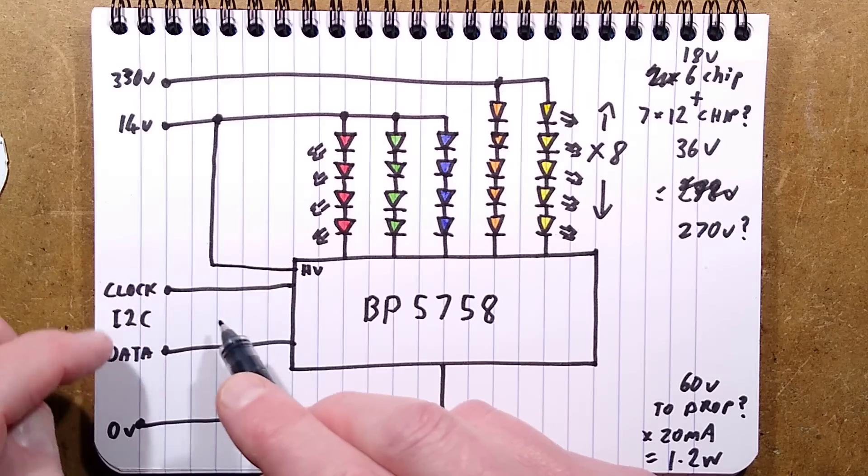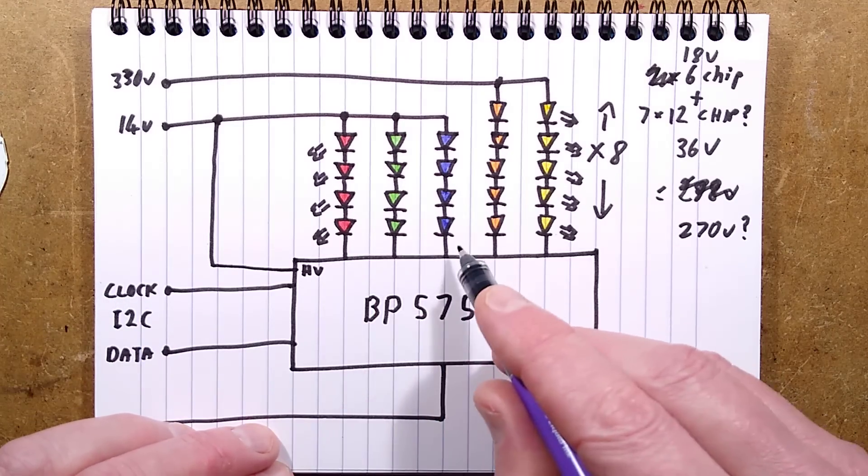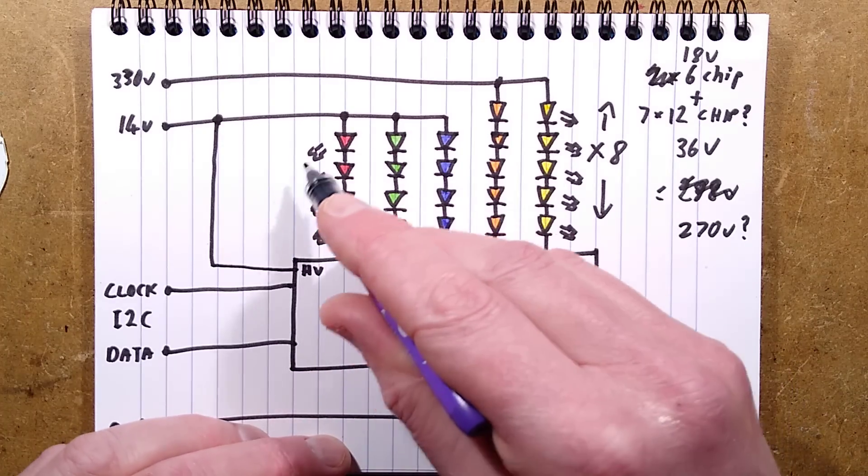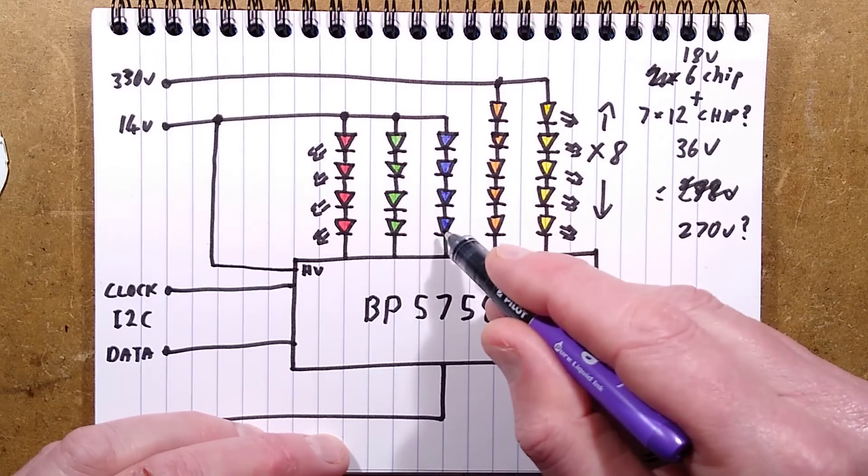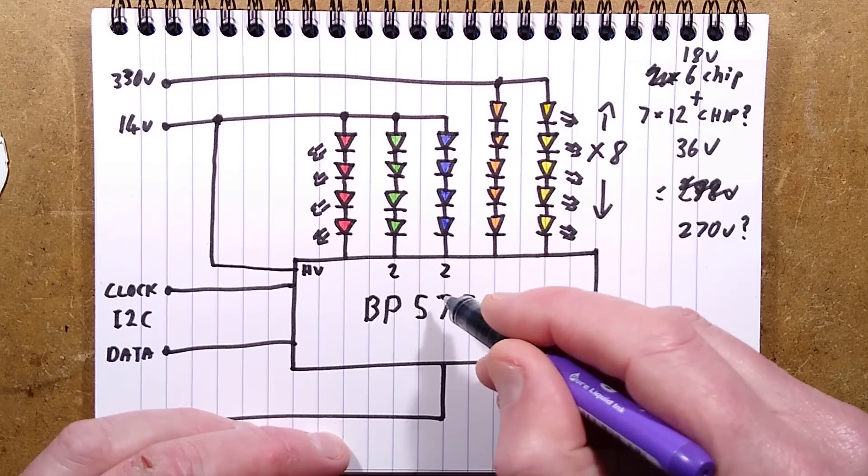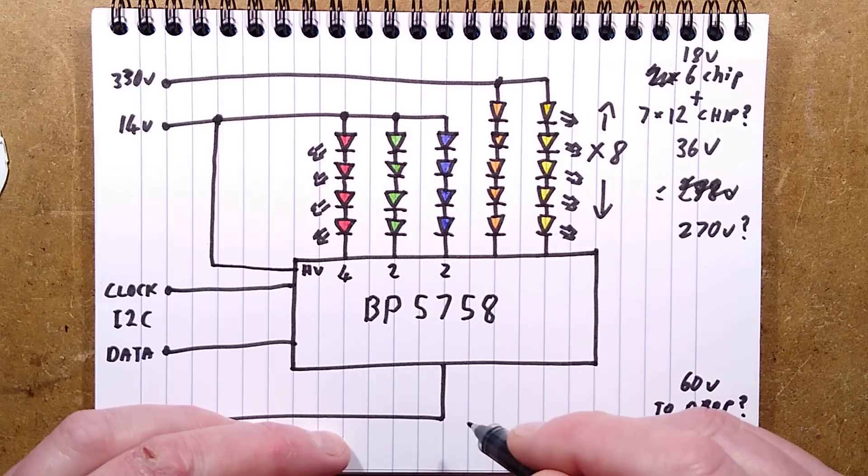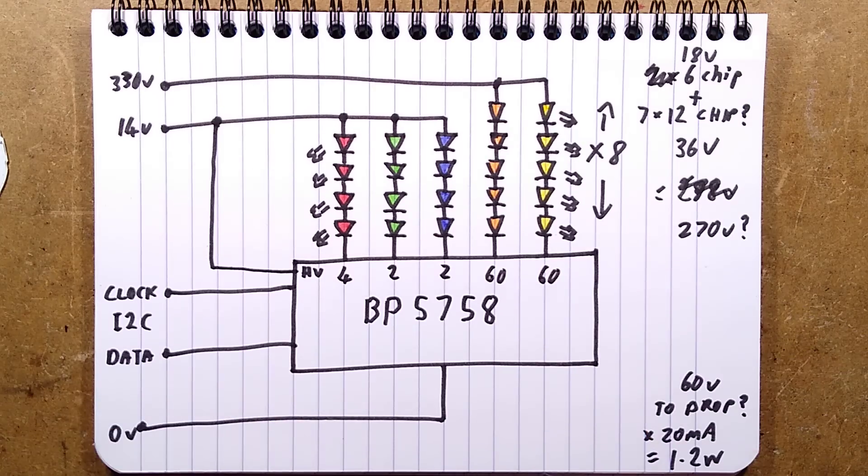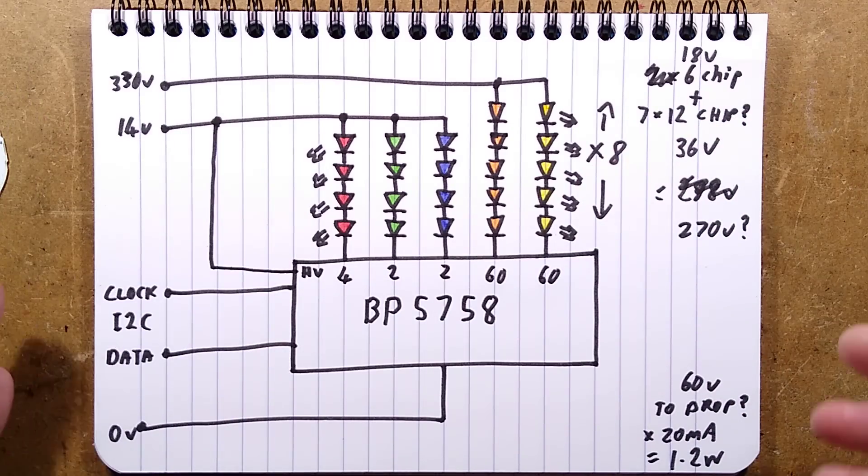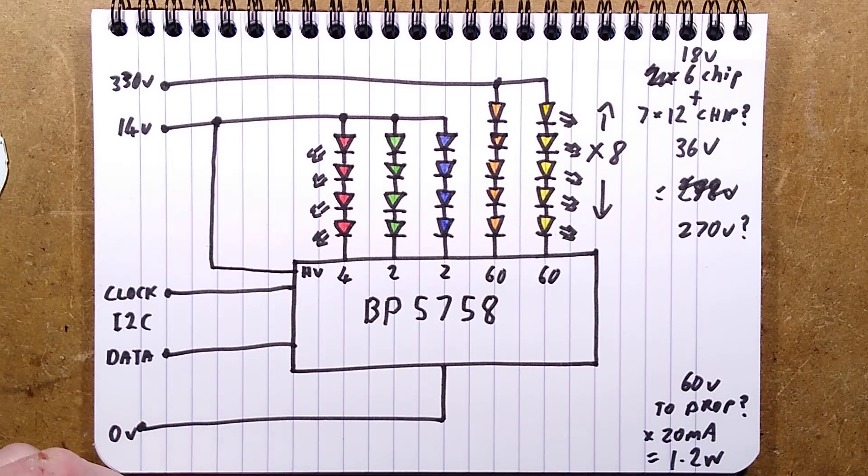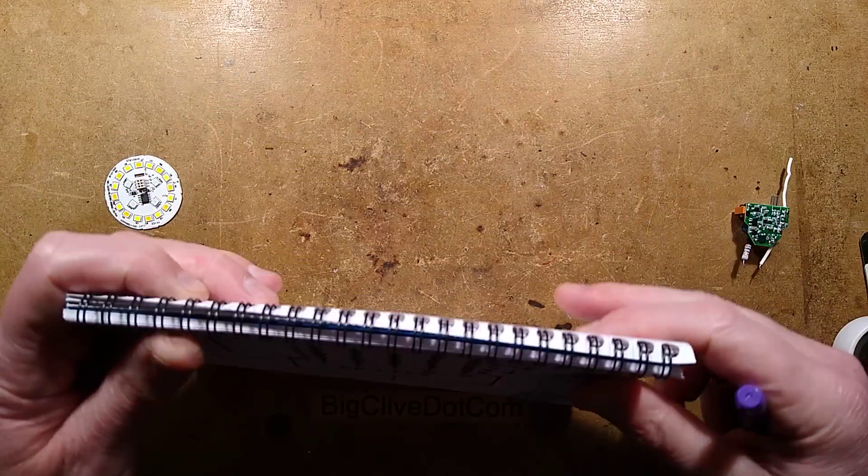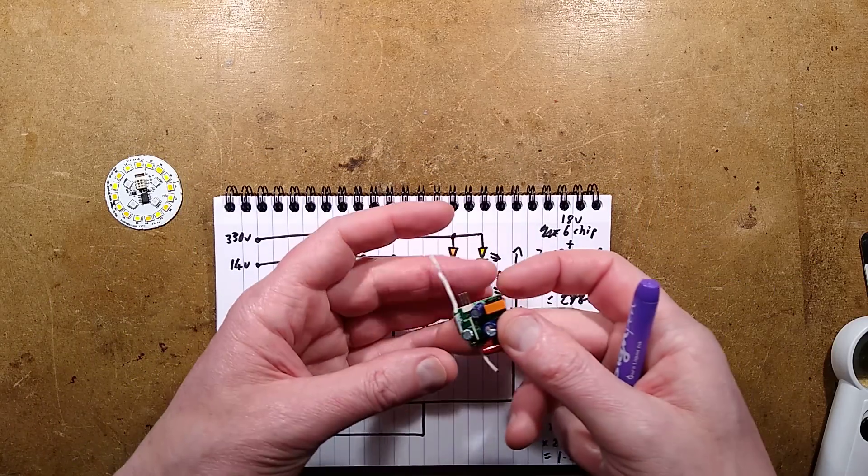The clock and data come in. There's no current sense resistor - all that is done by telling the chip via clock and data how much current each channel has to pass, and it will program that internally and drive it. Across the 14 volt supply we've got four blue at roughly three volts each - 12 volts, dropping two volts for the green and probably about four volts for the red. But I calculate more like 60 for the warm white and cold white, which seems excessive. I guess maybe they're just trying to increase the width of the voltage range.